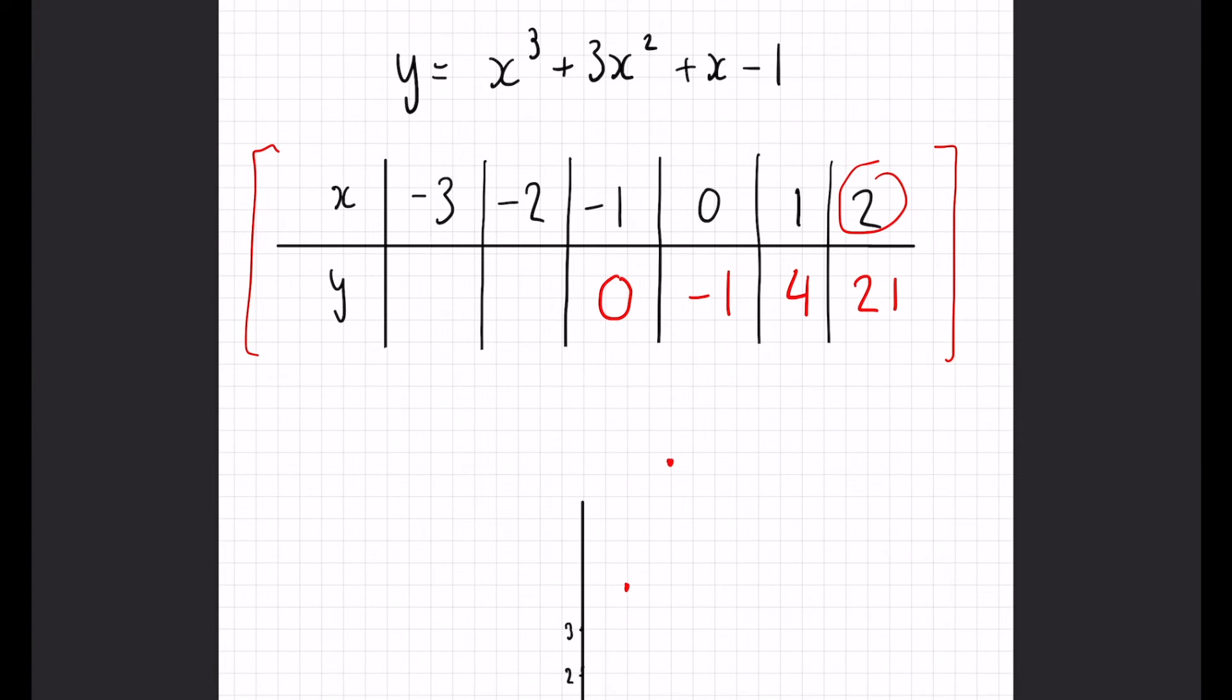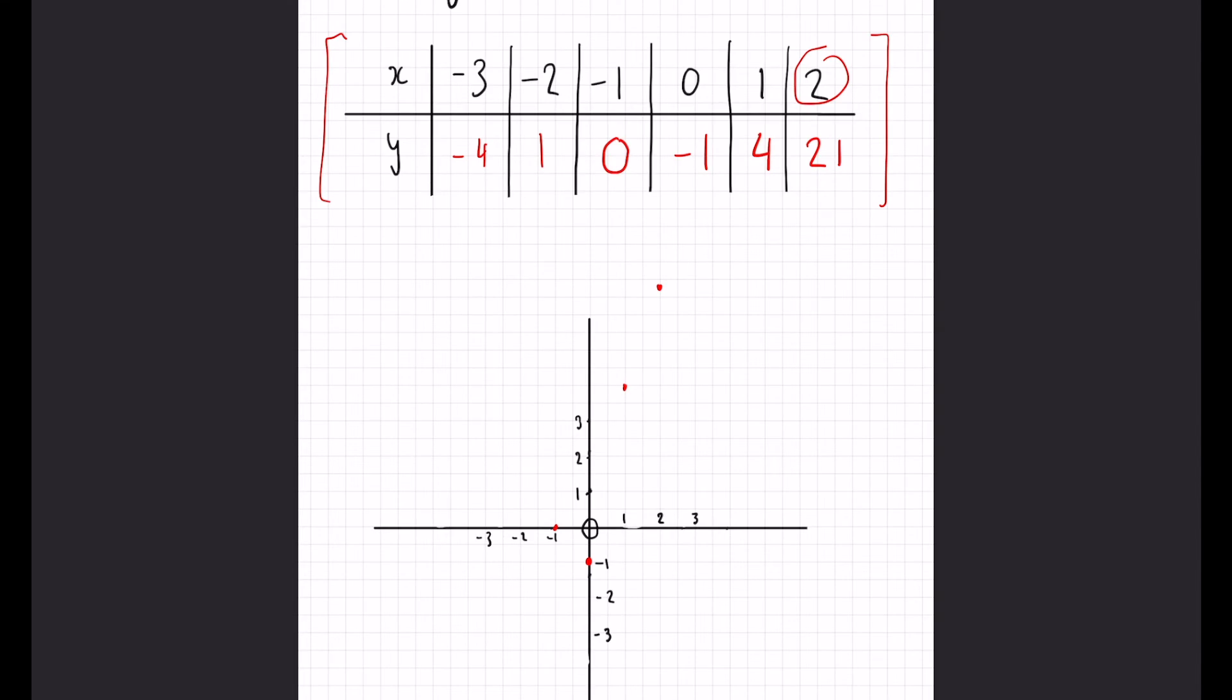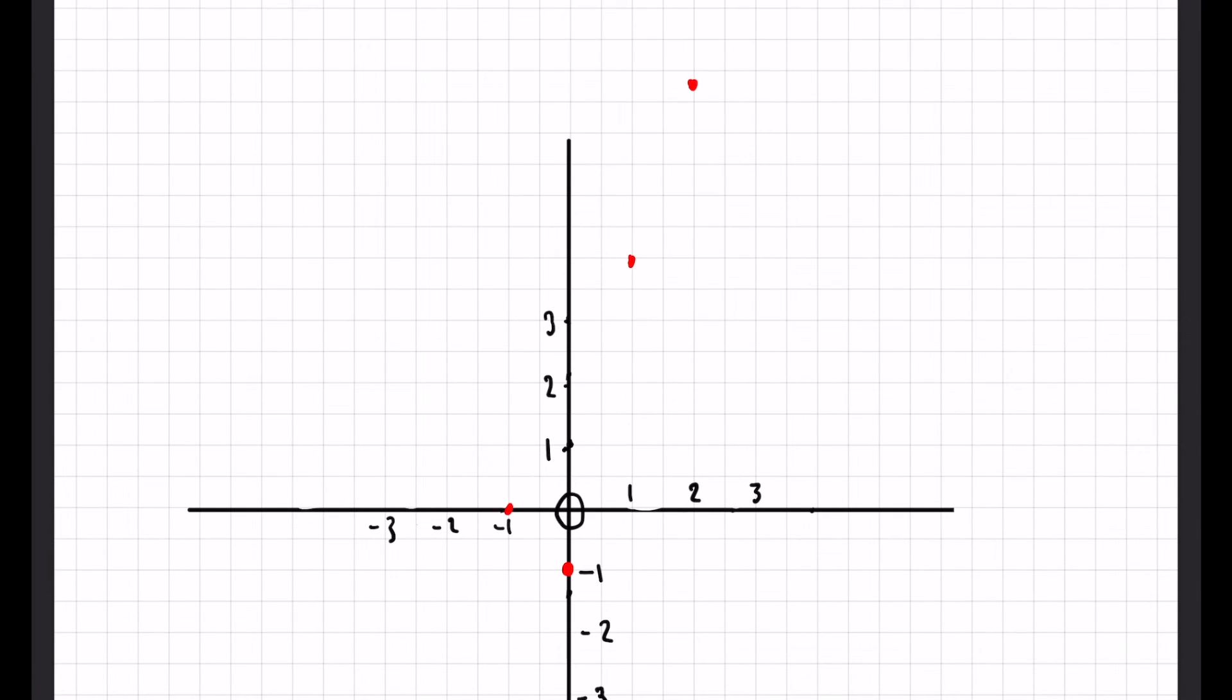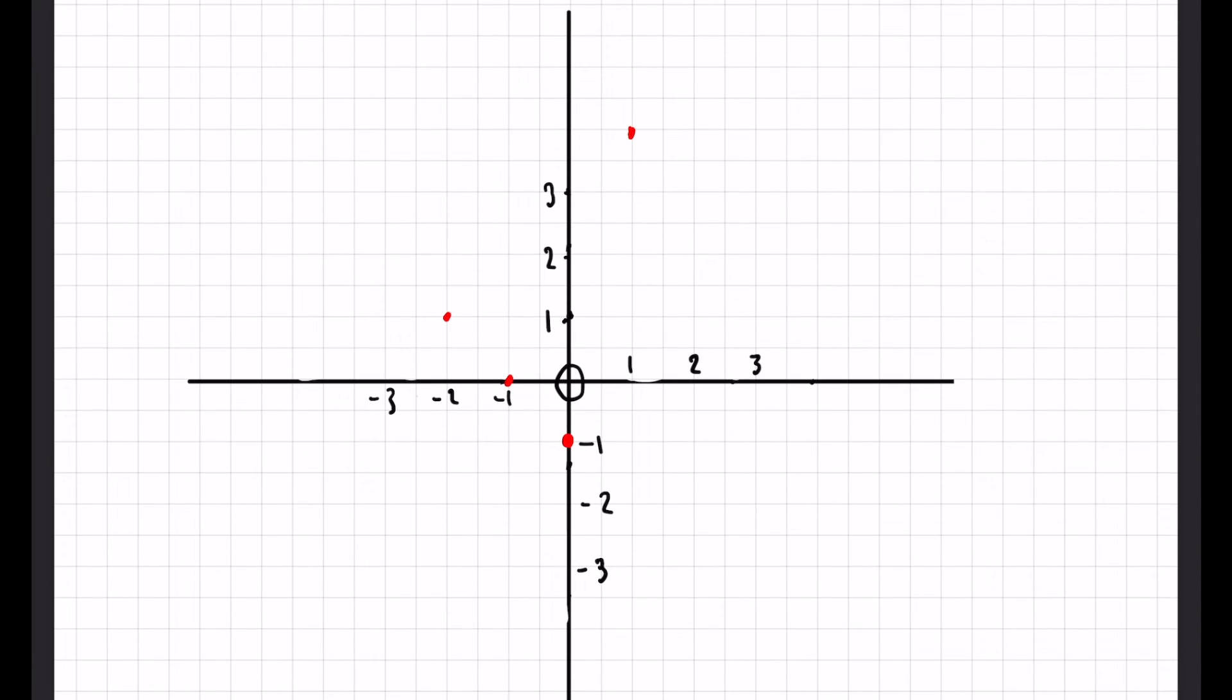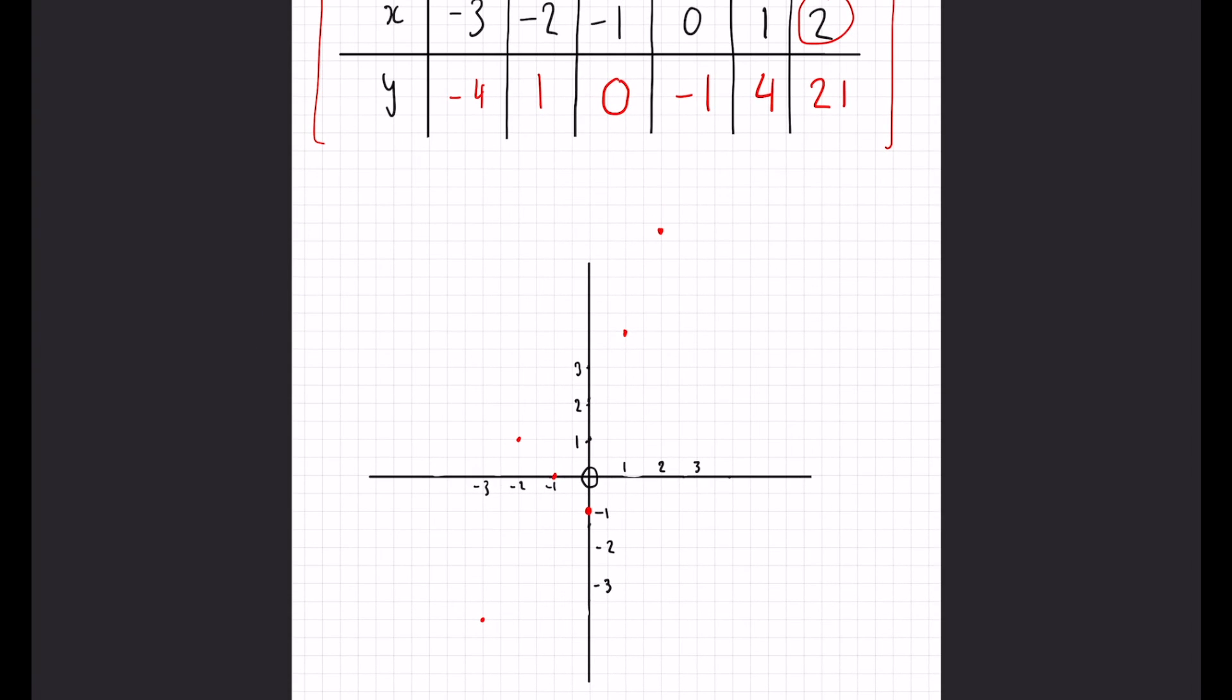I'm just going to do the same for the last two quickly, to save a bit of time. Here is our complete table. All we have to do now is just plot on the last few points. So, minus 2 gives us 1, and minus 3 gives us 4. So, there.